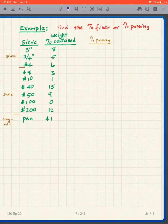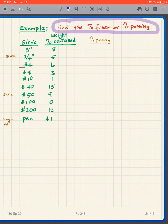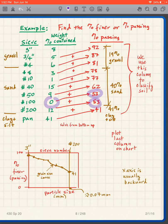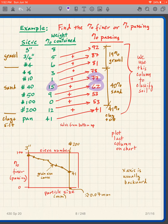Here is another example — find the percent finer and percent passing. I'm going to assume that you've paused the video and worked this problem. It's quite straightforward. I simply work from the bottom up: I have 41, I move the 41 there, then 41 plus 12 is 53, 53 plus 0 is 53, 53 plus 9 is 62, 62 plus 15 is 77, 77 plus 1 is 78.